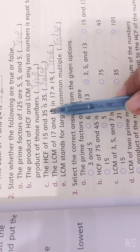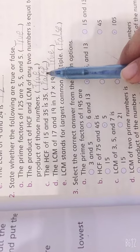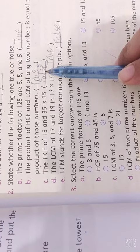The HCF of 15 and 35 is 35. False. This is false. It is not HCF. It is 5.